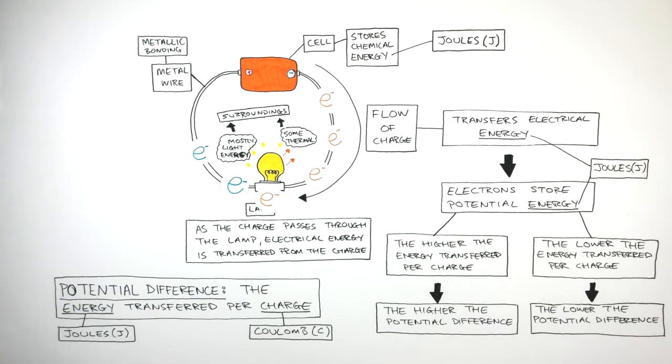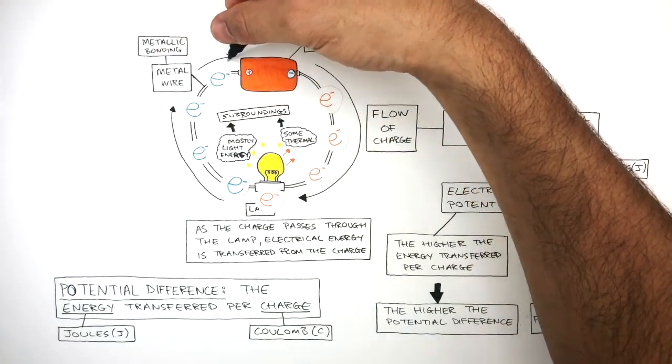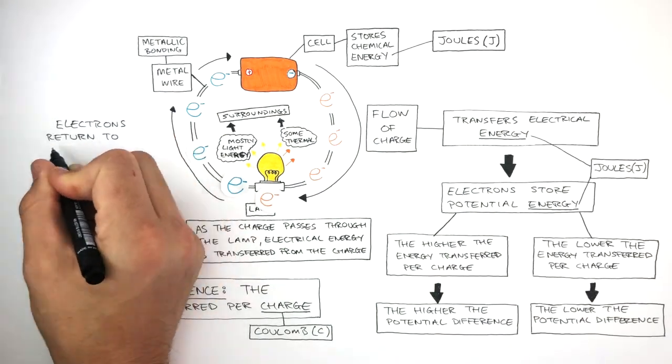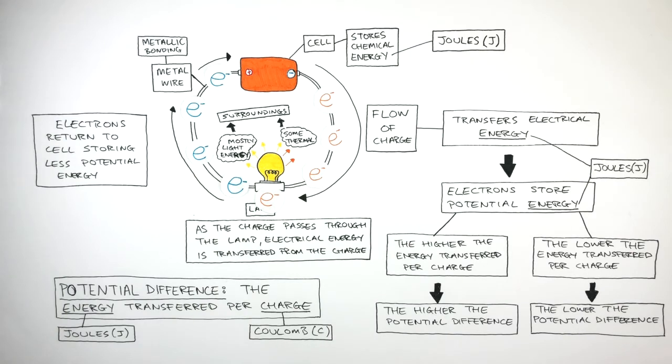The electrons pass out of the lamp and flow back to the positive terminal of the cell. The electrons return to the cell, storing less potential energy as they transferred electrical energy to the lamp.